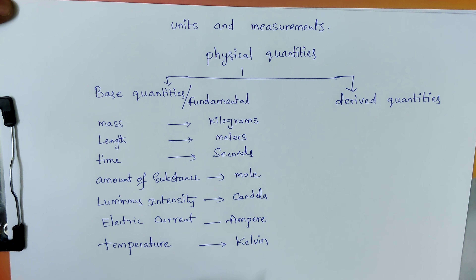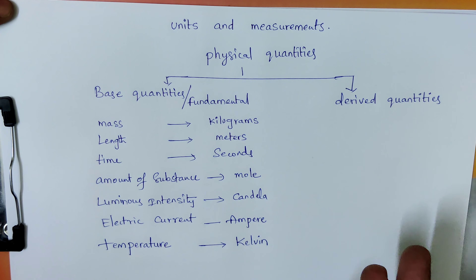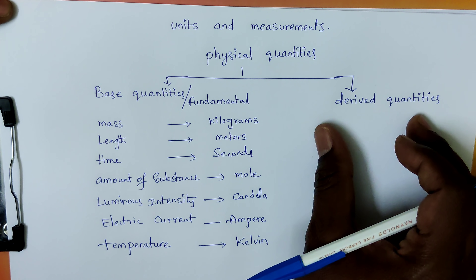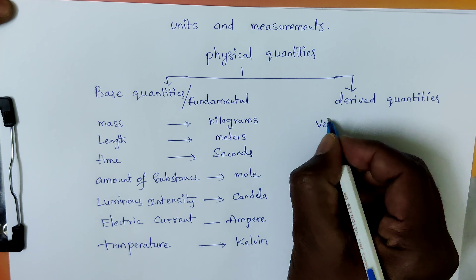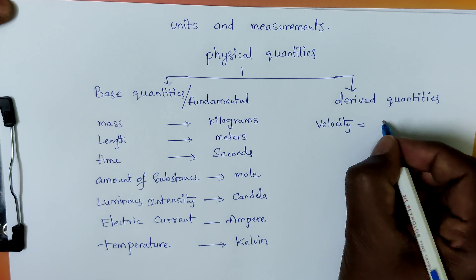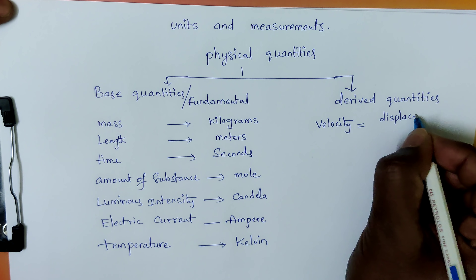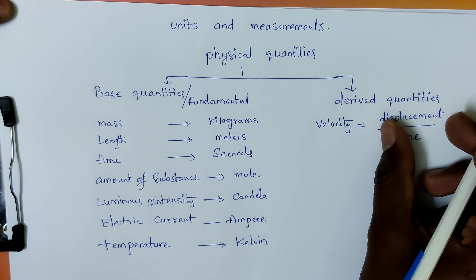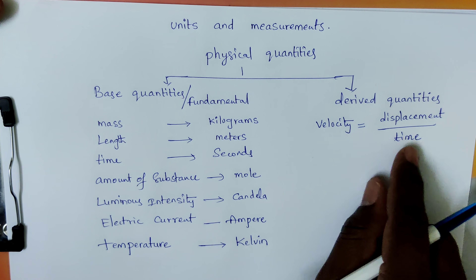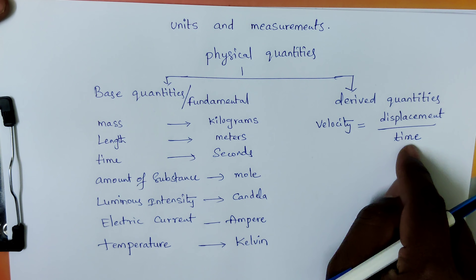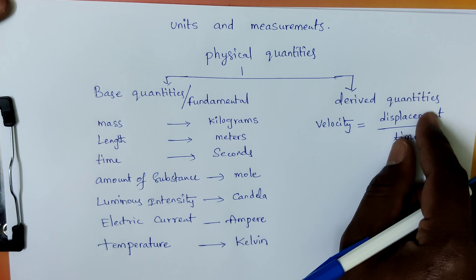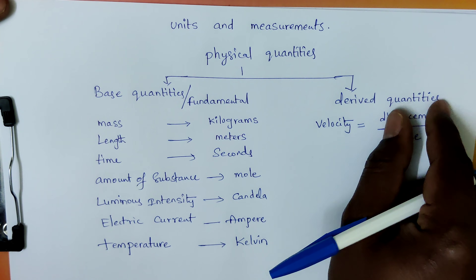These are the seven fundamental physical quantities and their units. We are going to discuss derived physical quantities. We call them derived because we can derive them using base quantities. For example, velocity is a derived quantity. Its definition is displacement divided by time taken, where displacement is measurement of length — a base quantity — and time is also a base quantity. So velocity is derived from two base physical quantities and is called a derived quantity.